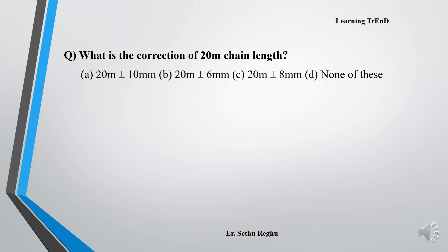Next question: What is the correction of 20 meter chain length? The options are 20 meter plus or minus 10 mm, 20 meter plus or minus 6 mm, 20 meter plus or minus 8 mm, and none of these. What is the answer? Option D, none of these. The correct answer is 20 meter plus or minus 5 mm.